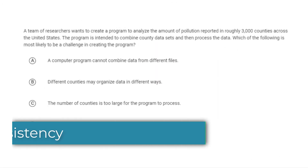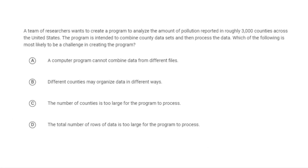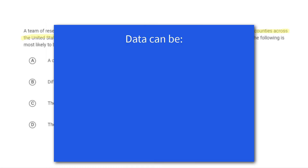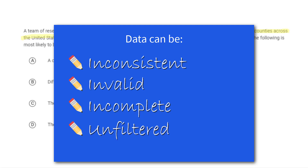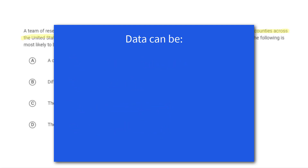Here's another problem about interpreting data, but this one is specifically about data consistency — and particularly, cleaning data, which is the concept that data can be inconsistent across different data sets. Here we have some pollution data containing information from 3,000 counties across the United States. The question asks what are some of the challenges in combining all of this data. The main challenge is that information can be inconsistent, needs to be cleaned, or may need to be filtered.